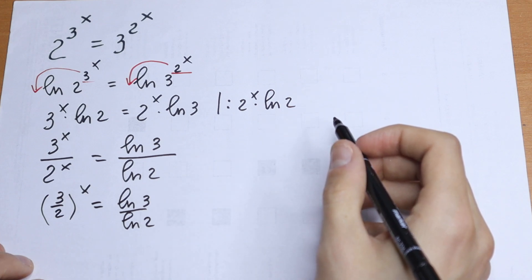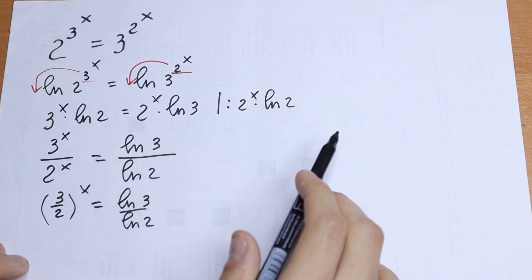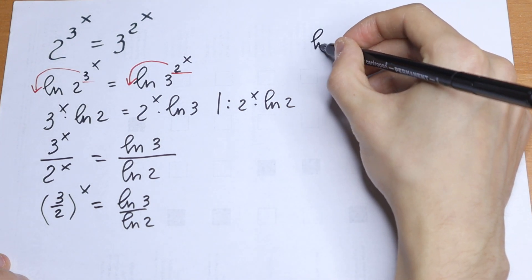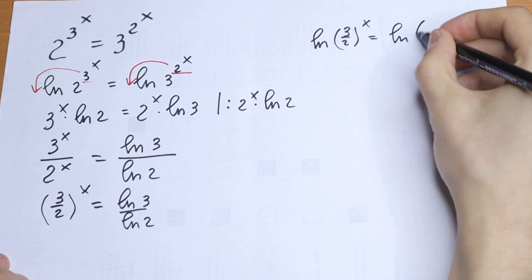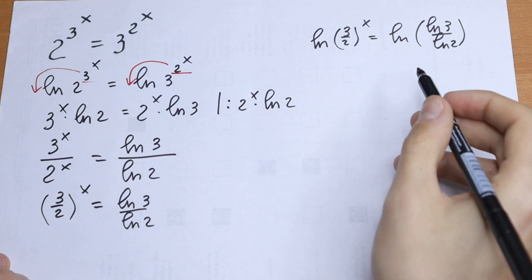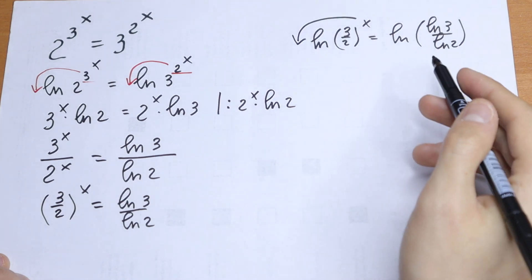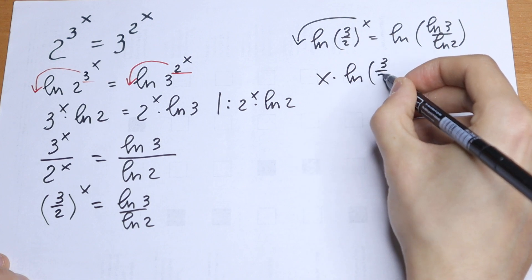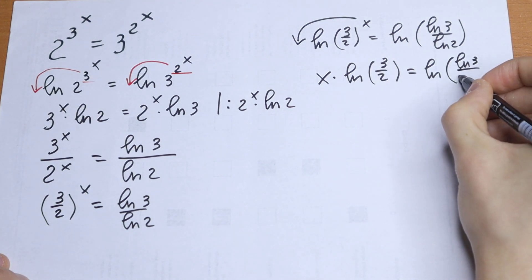Really good case, because we just take the natural log once more and x jumps right here. So we take natural log of 3 over 2 to the power x on the left, and natural log of natural log 3 over natural log 2 on the right. Using the log property, x comes down: x times natural log of 3 over 2, equal to natural log of natural log 3 over natural log 2.